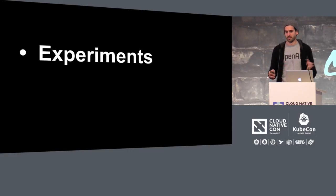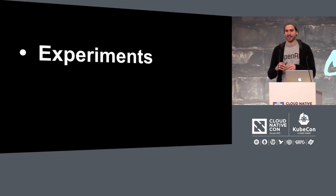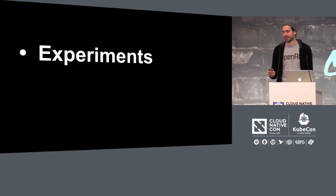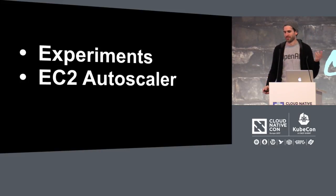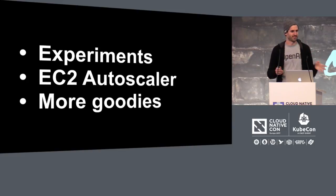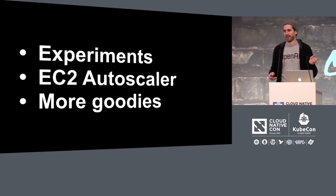Most of the work that we do is running experiments. Basically, each thing that we deploy is this beautiful and unique snowflake, so everybody has to learn how to use Kube. Since we're very bursty, we have an EC2 autoscaler and a bunch of other goodies that Vicky and Jonas, my colleagues, are going to talk about in their keynote tomorrow at 10.